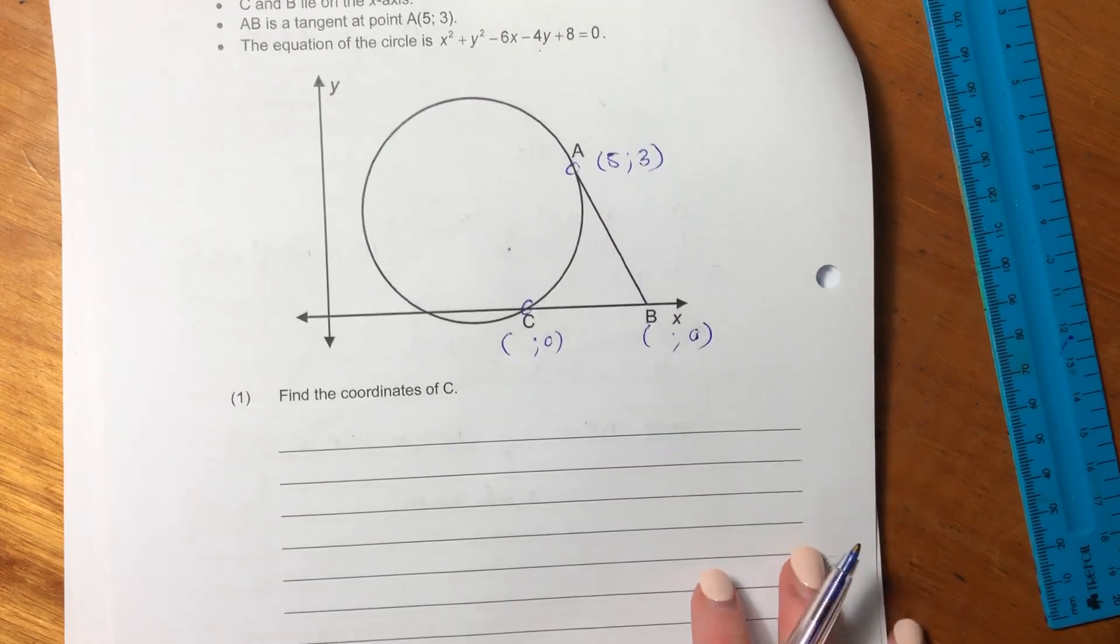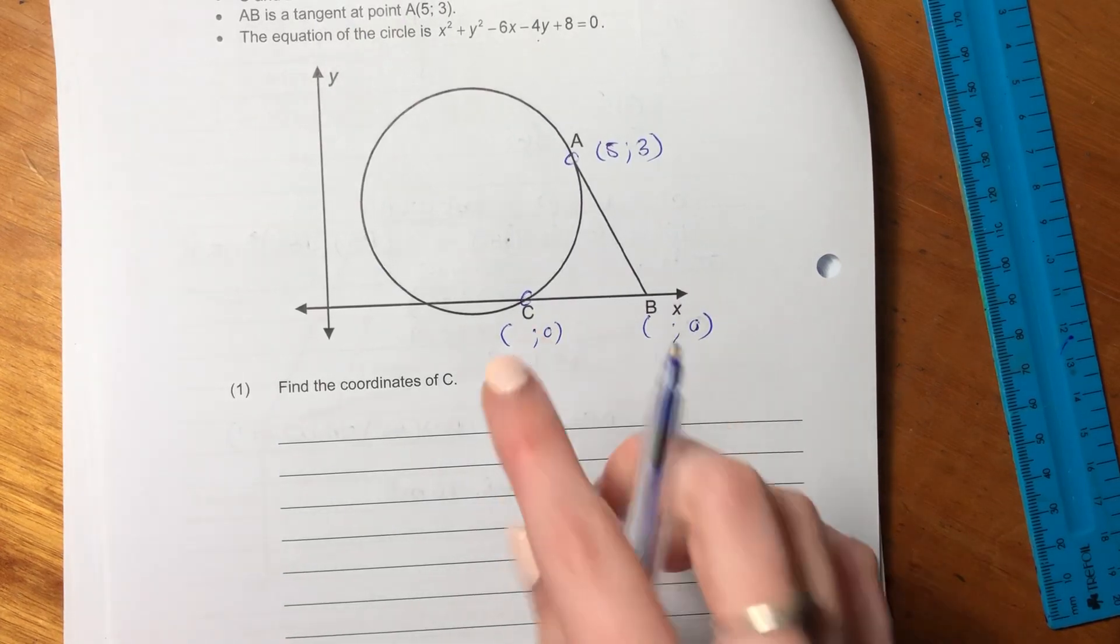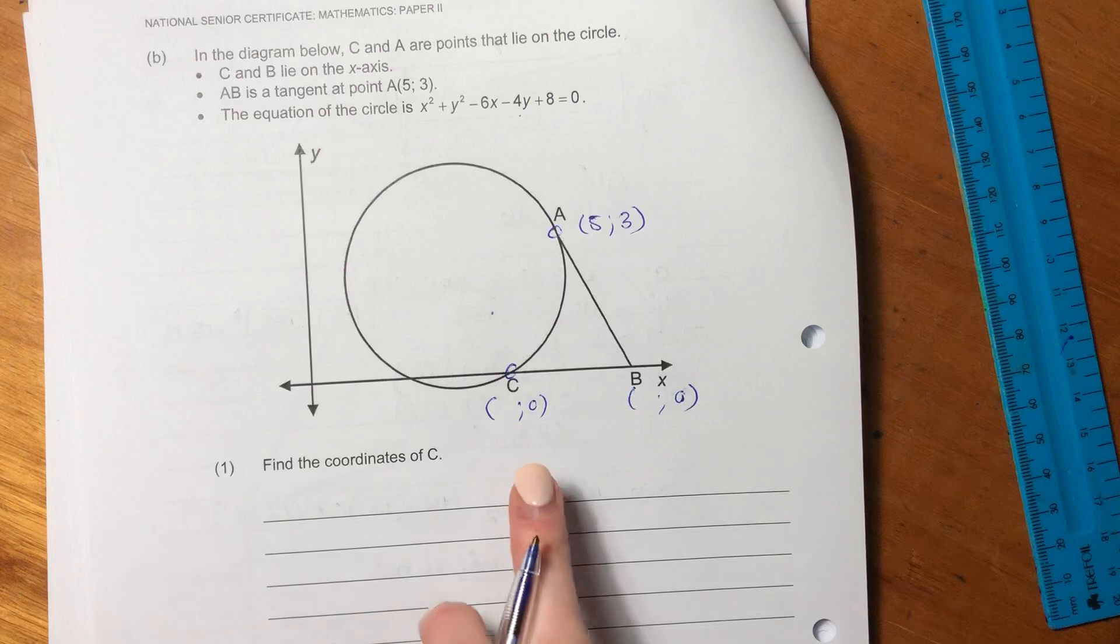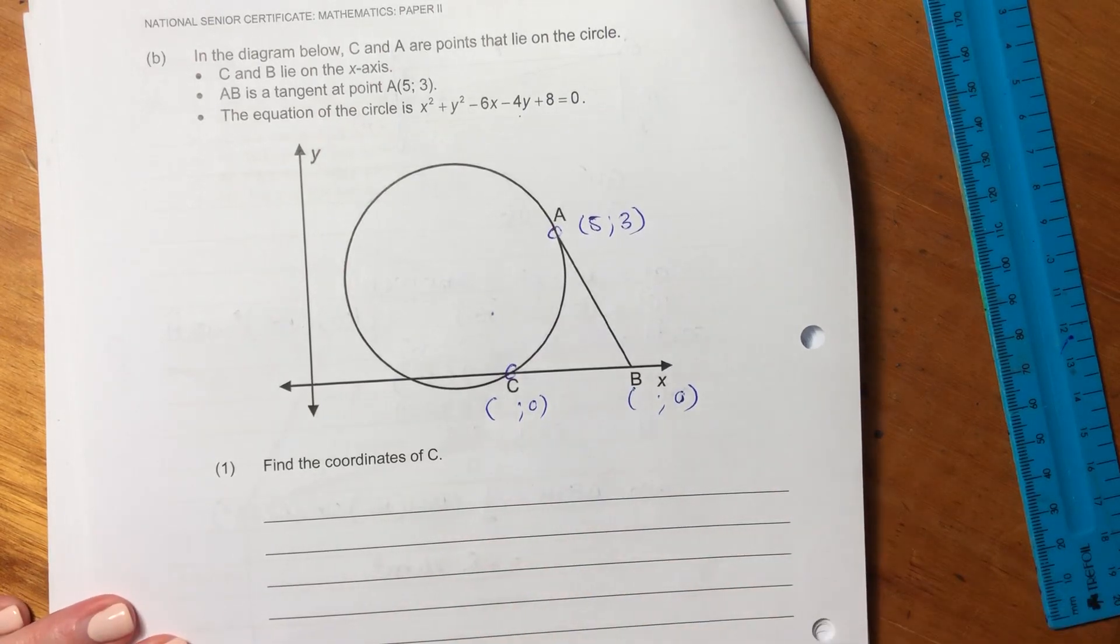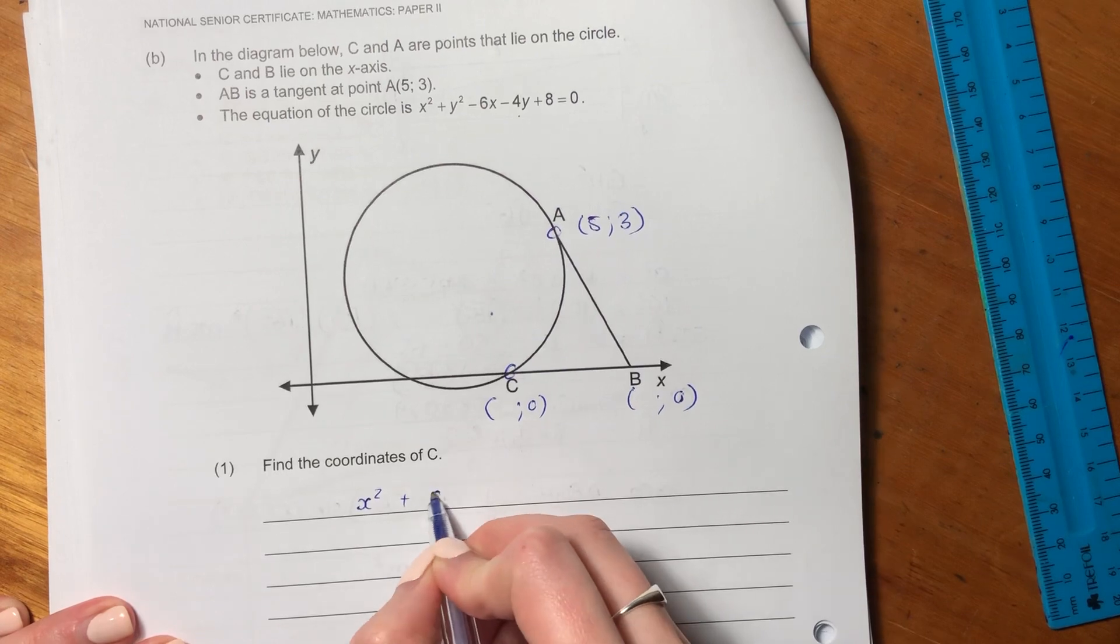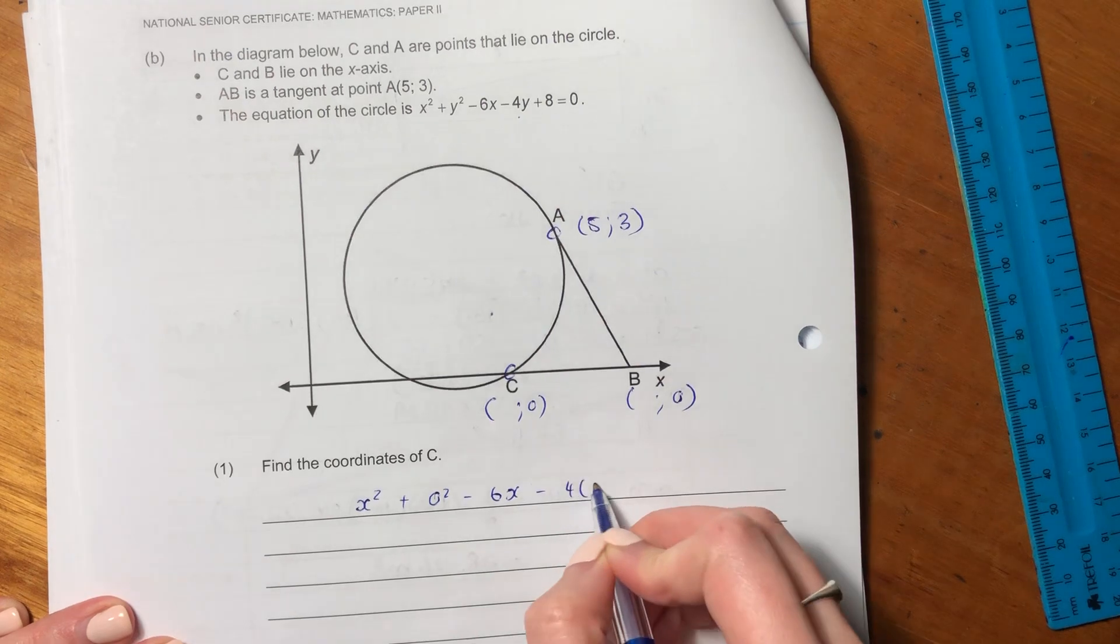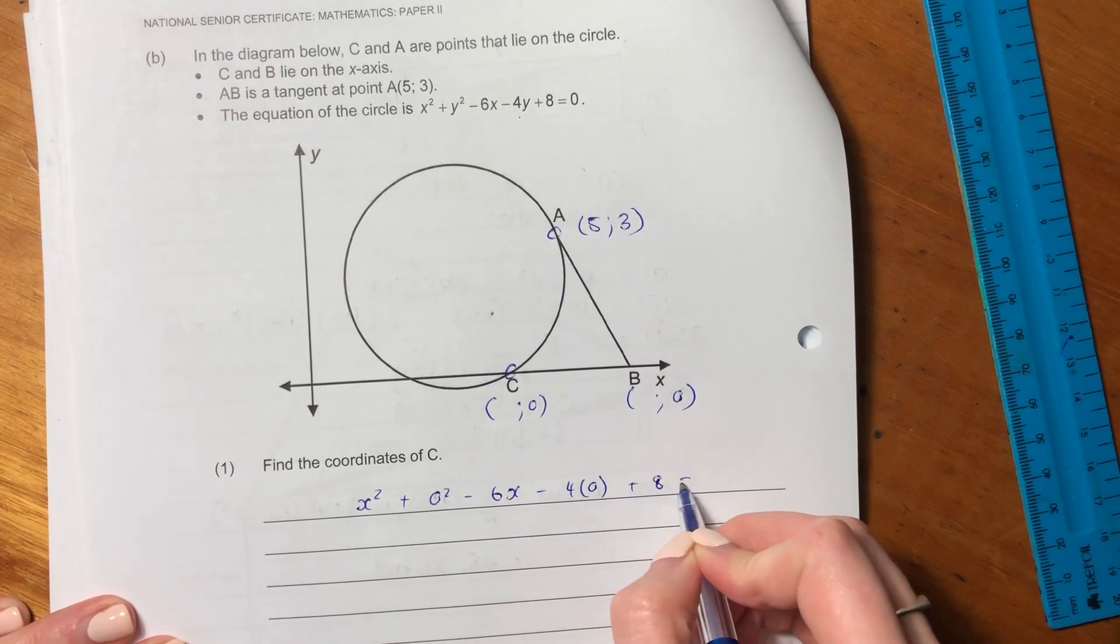So let's first read the first question. It says find the coordinates of C. So the coordinates of C lie on the circle, they told us that, and we know that its y value is equal to zero. So we can just sub in that y value equaling to zero, and it should give us some insight.